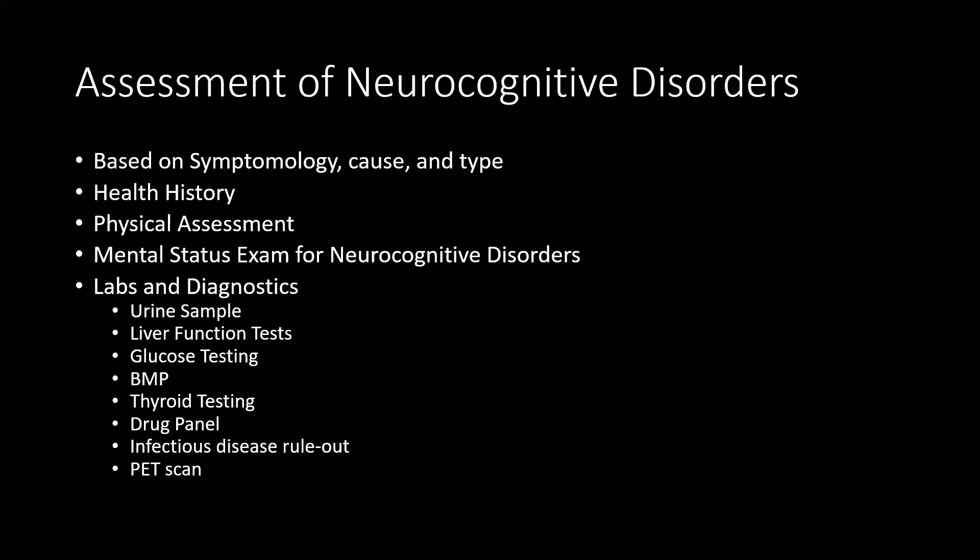Diagnostics may include urine sample, liver function tests, glucose testing, a BMP, thyroid testing, a drug panel, infectious disease rule-outs, and a PET scan. The PET scan, in particular, may be effective in identifying Alzheimer's disease.